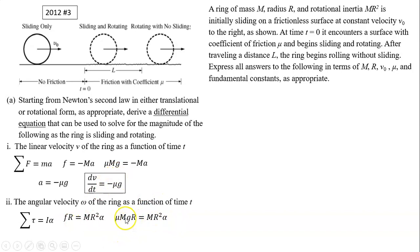Substitute in, cancel out m, cancel one r, so α equals μg over r. Again, write in differential equation form, dω/dt should be equals to μg/r. And that's the answer for number 2.